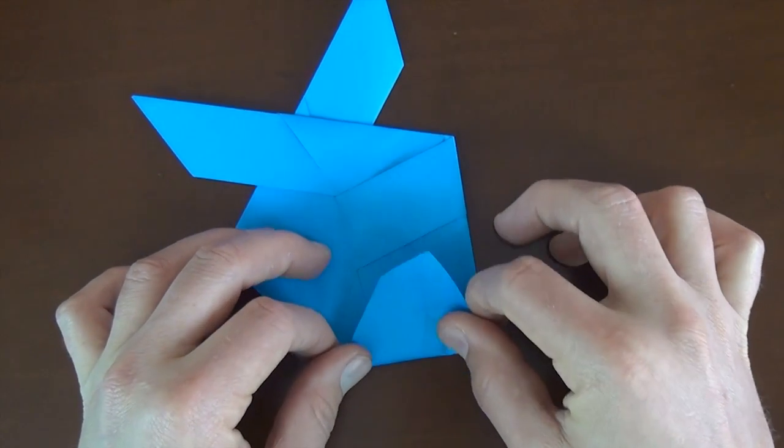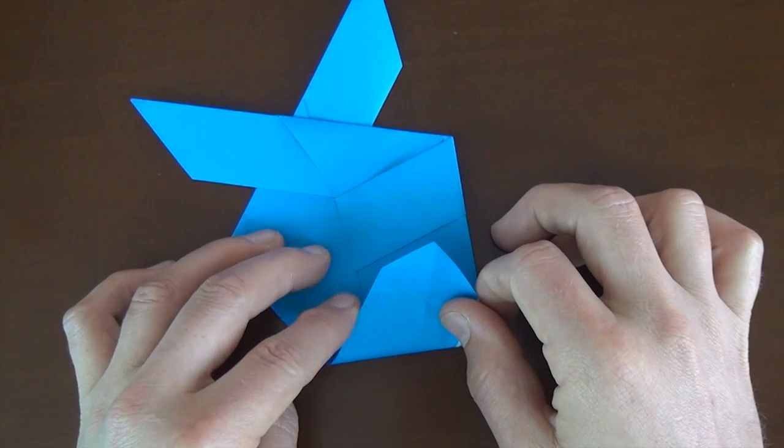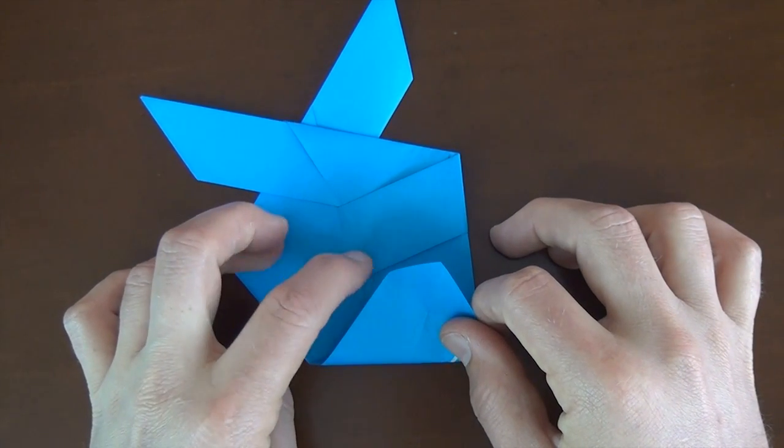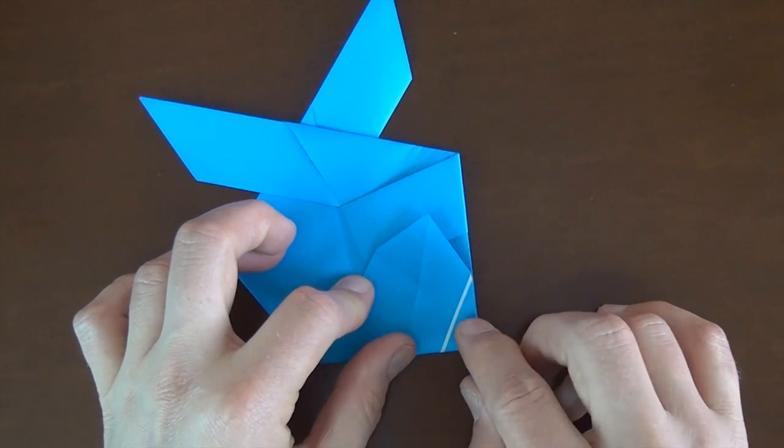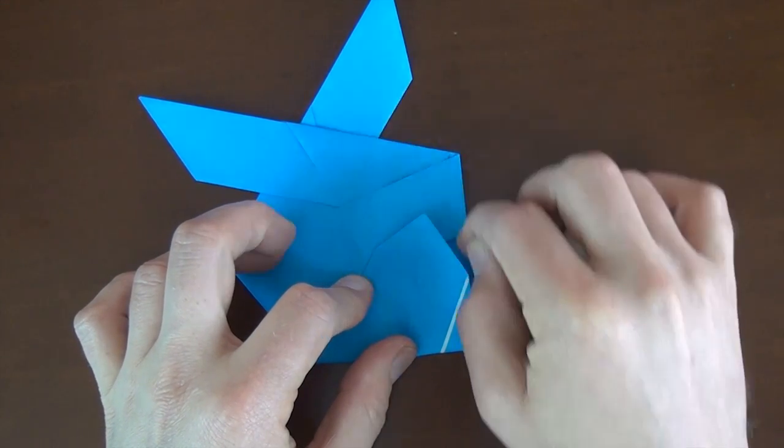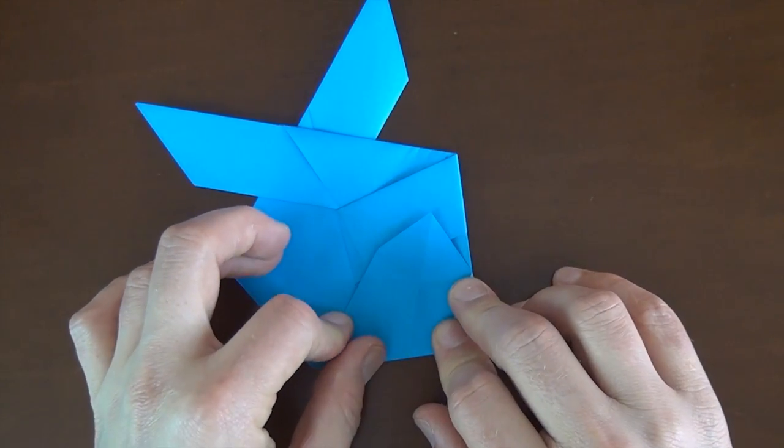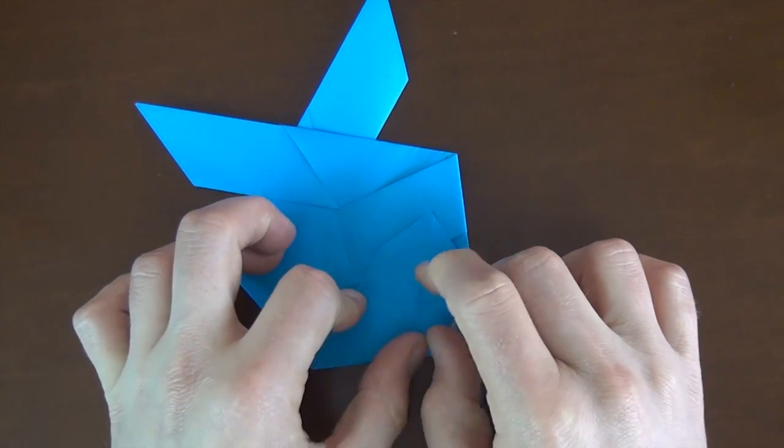And we're folding it how far? We're folding it so that this edge touches this point. So line it up like this. And you want to make sure that this edge lines up. And when it lines up, make the fold.